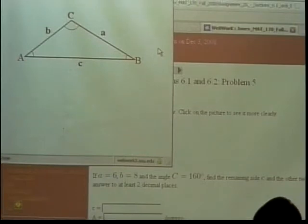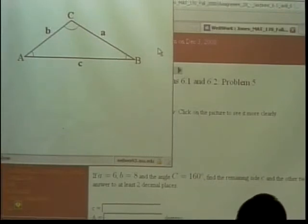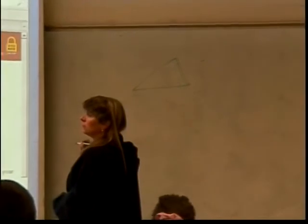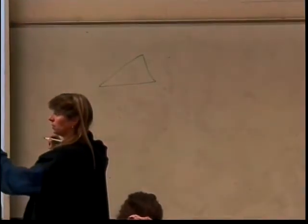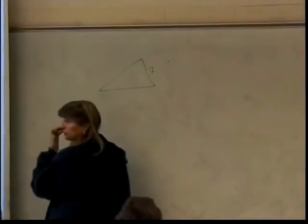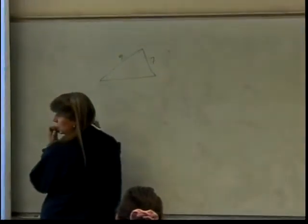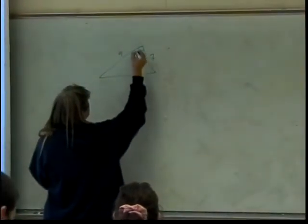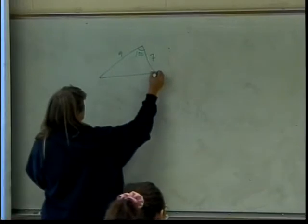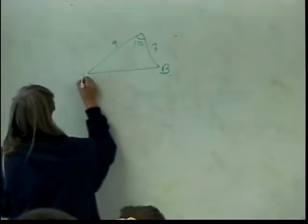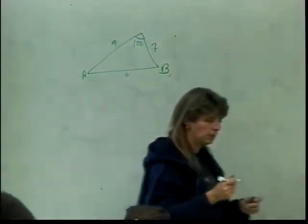So according to Brenda, her computer doesn't like her and is being very mean on this problem. Here is our really strange looking triangle. You say side a is 7, so this is 7. Side a is 9, and angle C is 100. So this is what they call angle B, this is angle A, and this is angle C. And we're supposed to find them all.